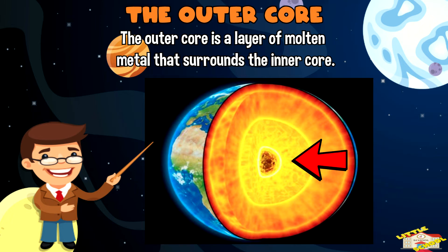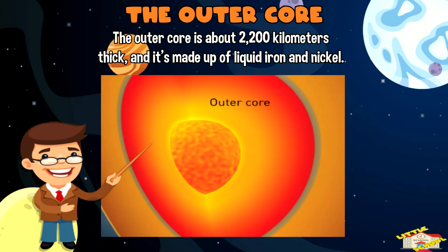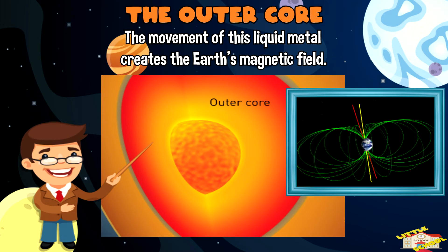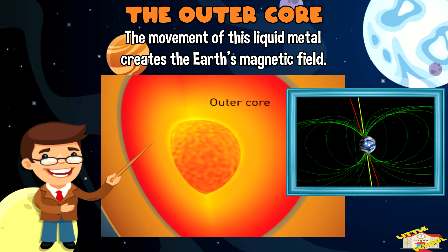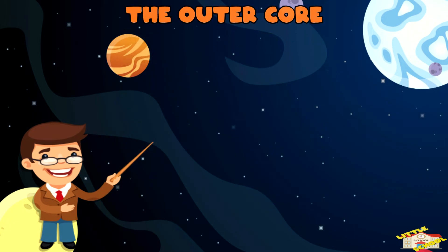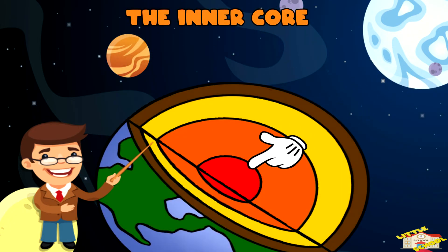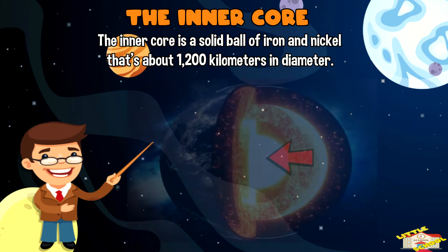The outer core is a layer of molten metal that surrounds the inner core. The outer core is about 2,200 kilometers thick and it's made up of liquid iron and nickel. The movement of this liquid metal creates the Earth's magnetic field.